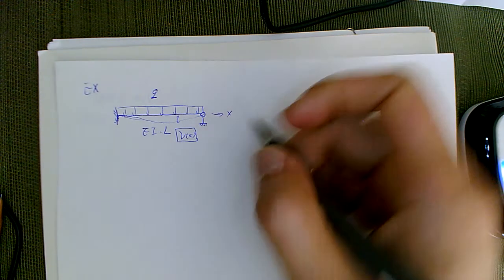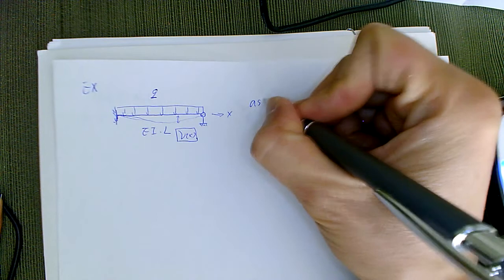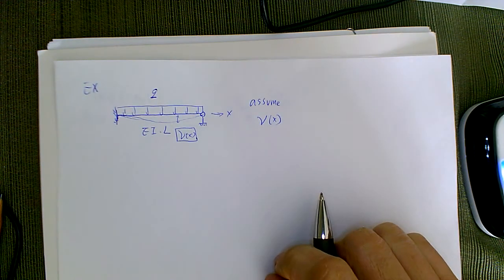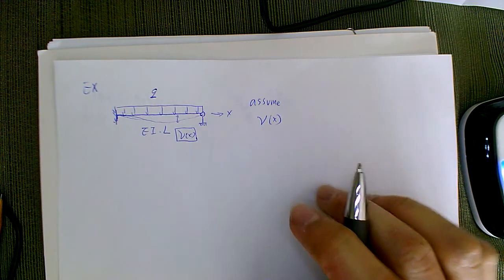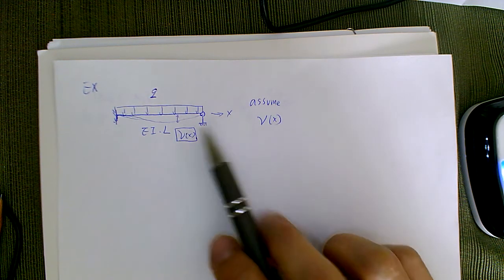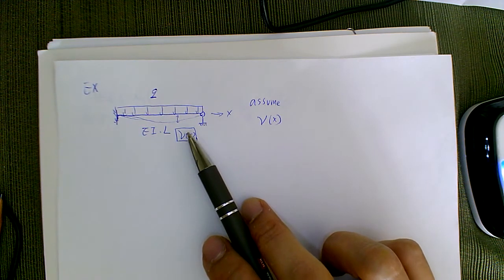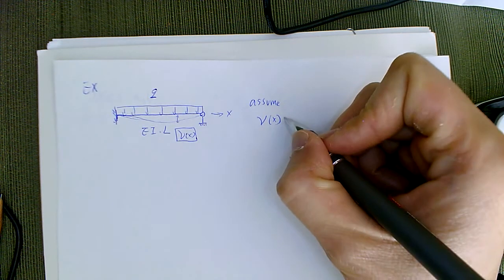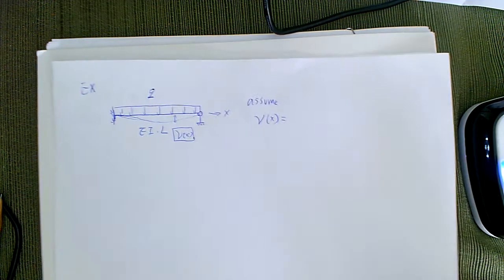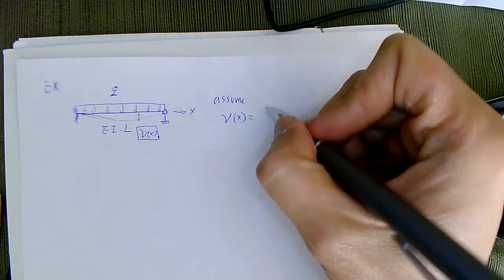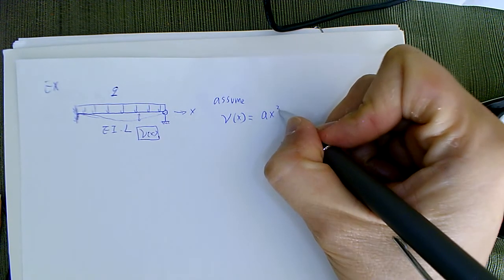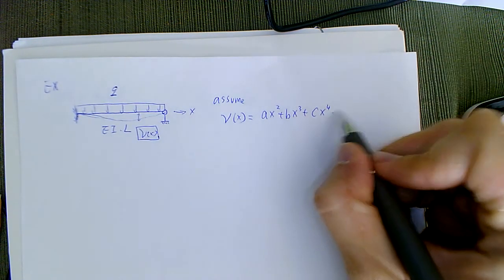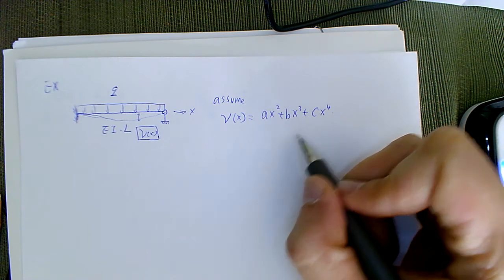So let's try to solve it. We're going to assume a V(x). If we can solve for V(x), we've got all deflections, all the stresses, strains, and everything. So we say it's probably going to be Ax² + Bx³ + Cx⁴. Three terms is probably enough.